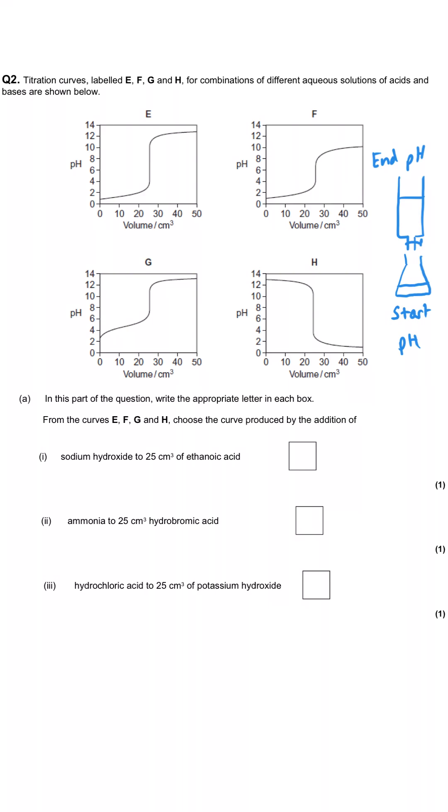This next question is really similar at the beginning to the first. This is for good practice. So we've got four curves again. We're adding one thing which will be where the final pH will lie. And then we're adding it to a different thing and that will indicate what the pH should be at the beginning. So we're adding sodium hydroxide, strong base, so high finishing pH, to ethanoic acid, a weak acid. So it will start at the weak acid pH and finish at the strong base pH. And that is curve G because that is the only one that starts at about three at the beginning.